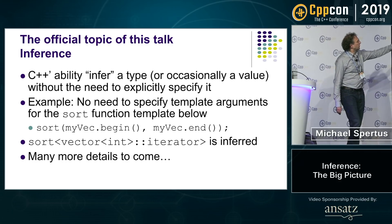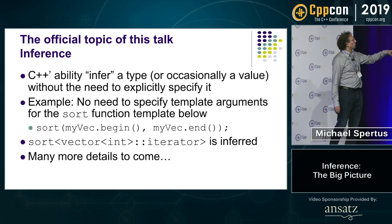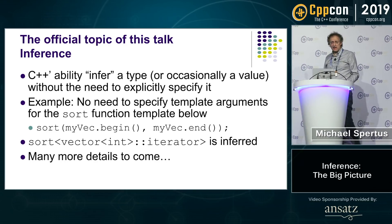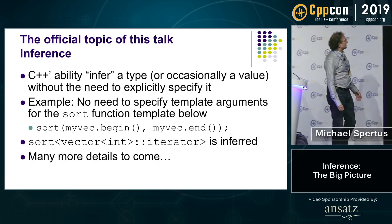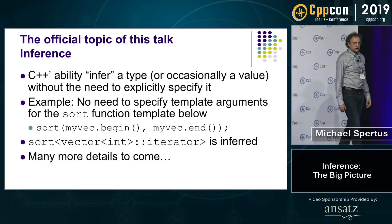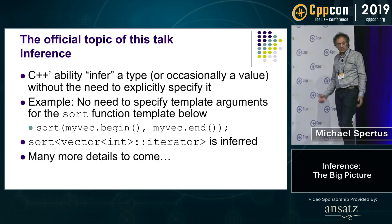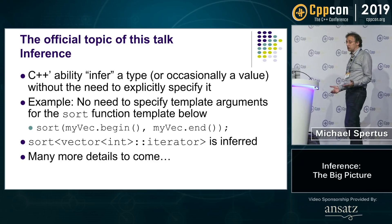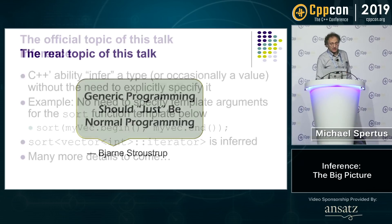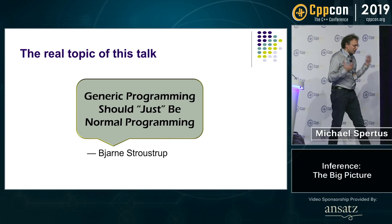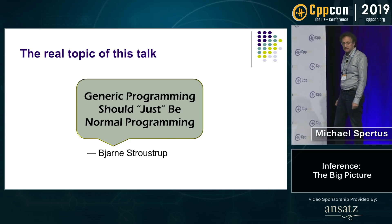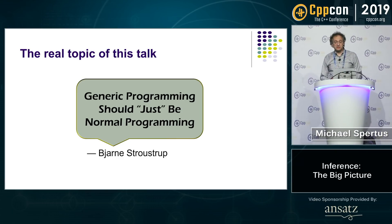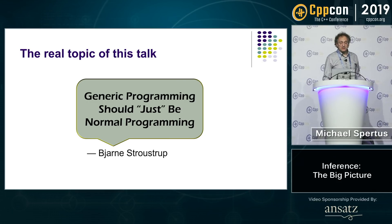For example, there's no need to specify the template arguments when you call sort, as on the slide. It actually infers that you mean to call sort with vector<int>::iterator. People almost always call sort and infer the arguments. Inference is the official topic, but the real topic is what Bjarne Stroustrup describes as 'generic programming should just be normal programming.'